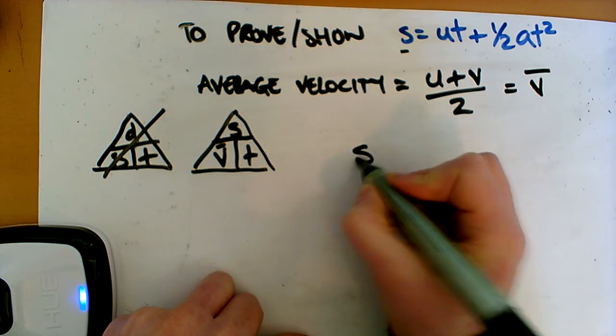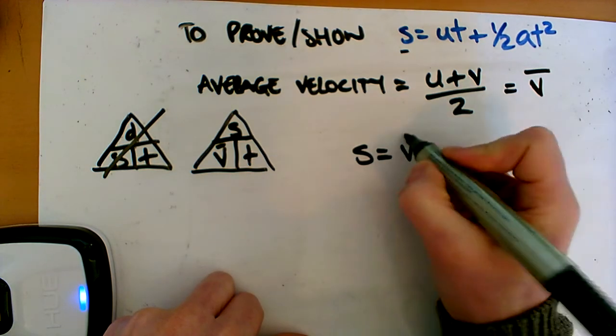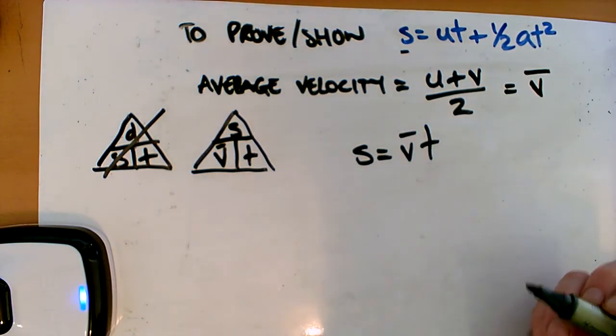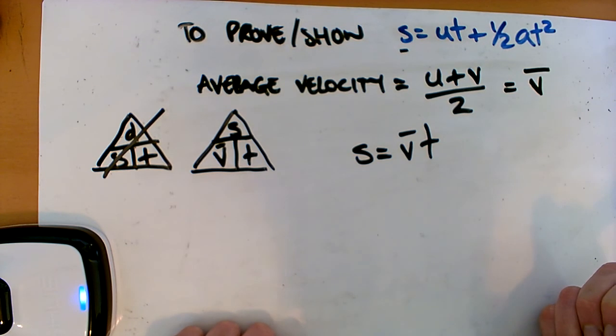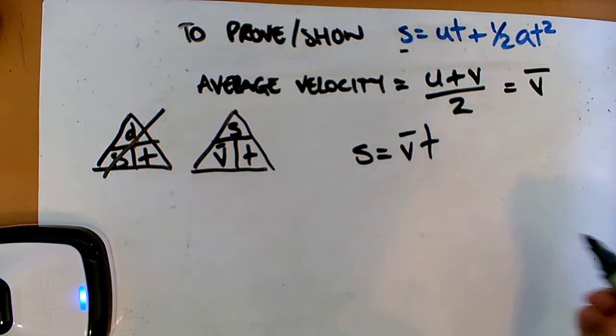So we're just going to use this triangle. And it's going to be S is just equal to V bar T. So our average velocity multiplied by our time. Okay? So this is the stuff that you should remember.